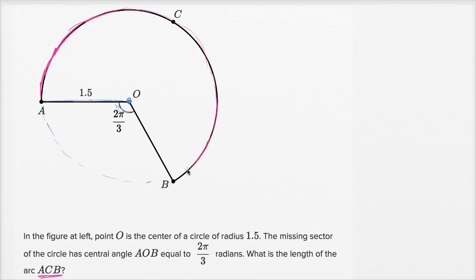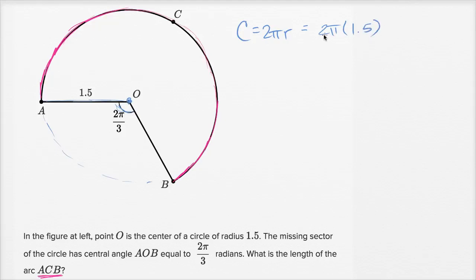The way I would tackle this: I would think, well, what's the circumference of the entire circle, and then what fraction of the entire circle is this arc length? So let's first think about the circumference of the entire circle. Circumference is equal to two pi times r; in this case our radius is 1.5. So it's going to be two pi times 1.5. Two times 1.5 is three, so this is going to be equal to three pi. The circumference of the entire circle is three pi.